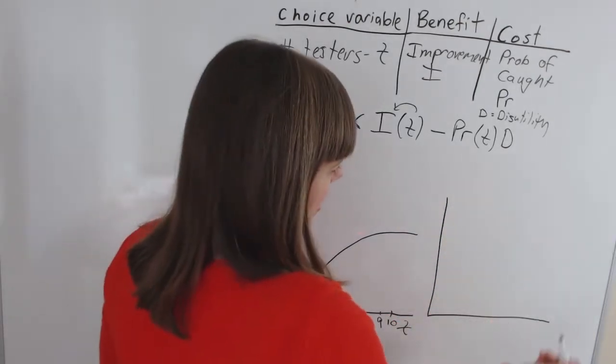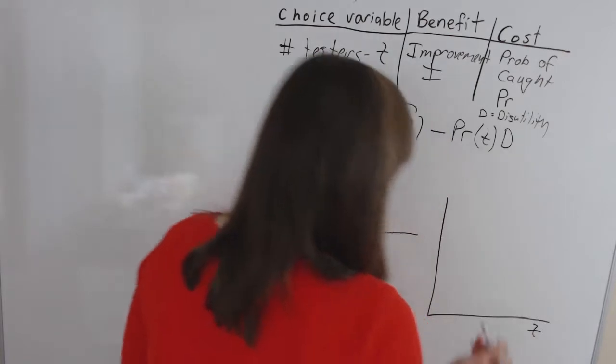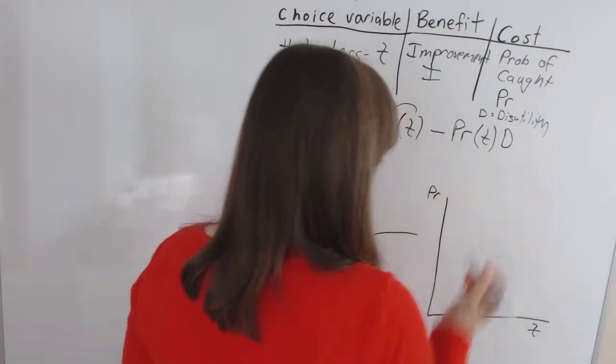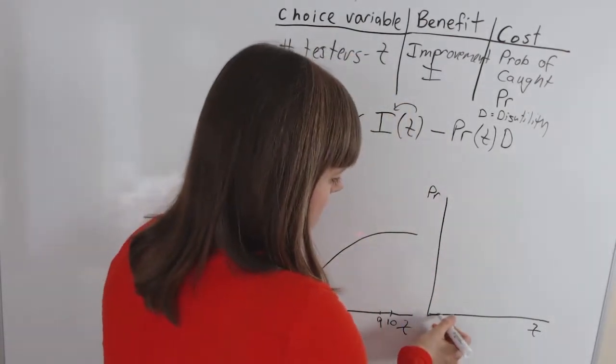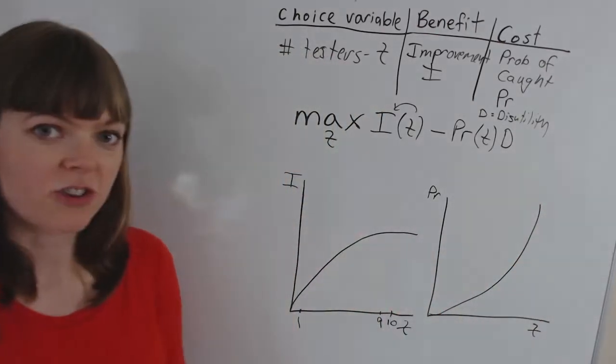Now the cost one, we're going to graph our choice variable on the x-axis versus probability of being caught and see if it follows the classic increasing marginal cost structure.